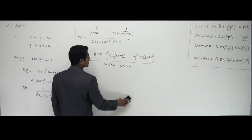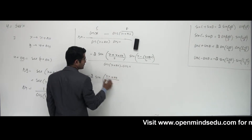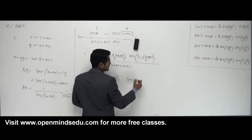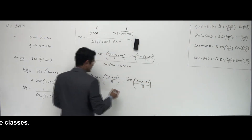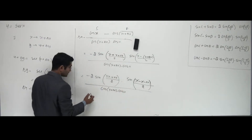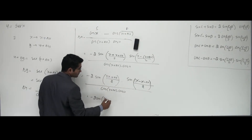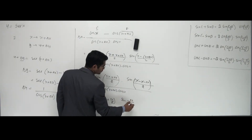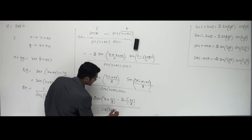Let's go ahead with this. I have minus 2, sin of (2x + delta x)/2. And if I open the brackets in the second sin term, I get sin of (x − x − delta x)/2, which simplifies to sin(−delta x/2). The 2s in the numerator and denominator can cancel. So I'm left with: minus 2 sin((2x + delta x)/2) times sin(−delta x/2), all over cos(x + delta x) times cos x.